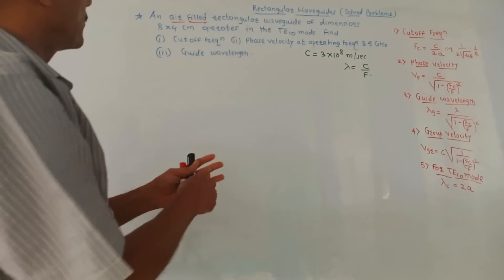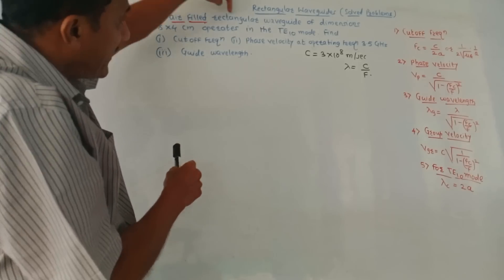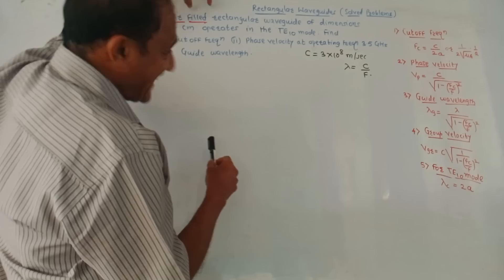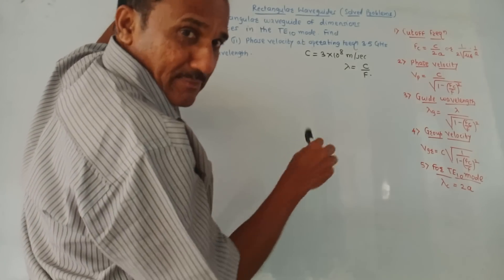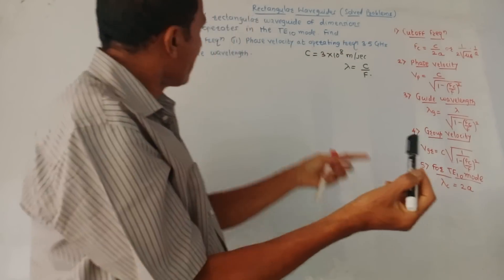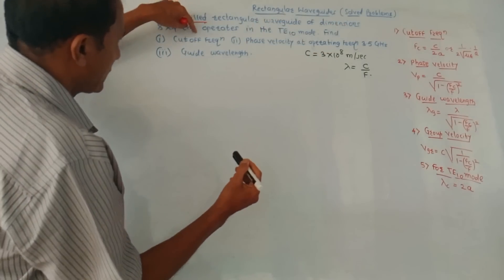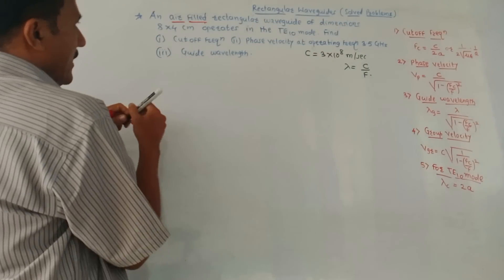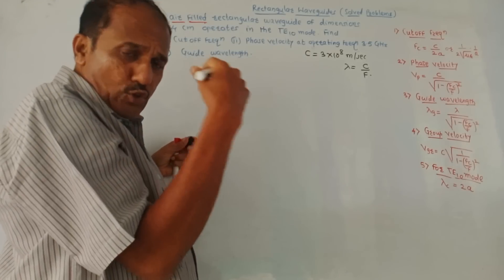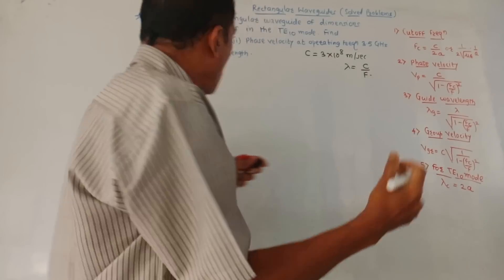Now let us solve a few numericals. The first problem is an air-filled rectangular waveguide — it is clearly mentioned it is air-filled, meaning the medium inside the waveguide is air. The dimensions are 8 × 4 centimeters. While reading the numericals, you should be in the habit of writing the given things in terms of notation.